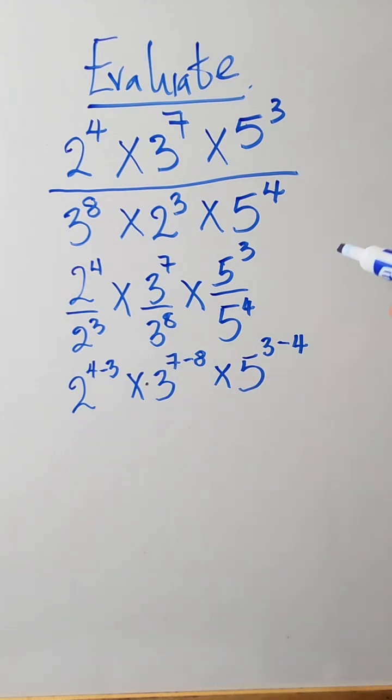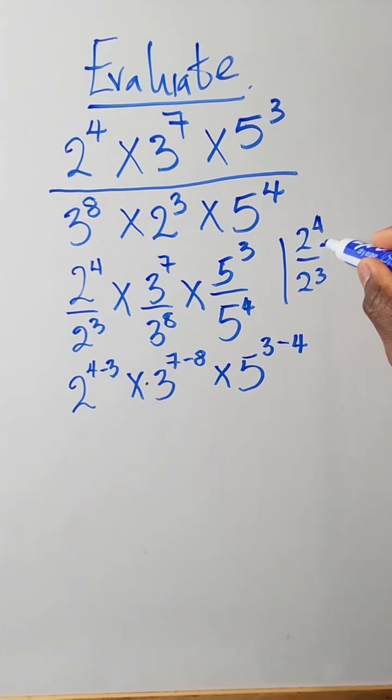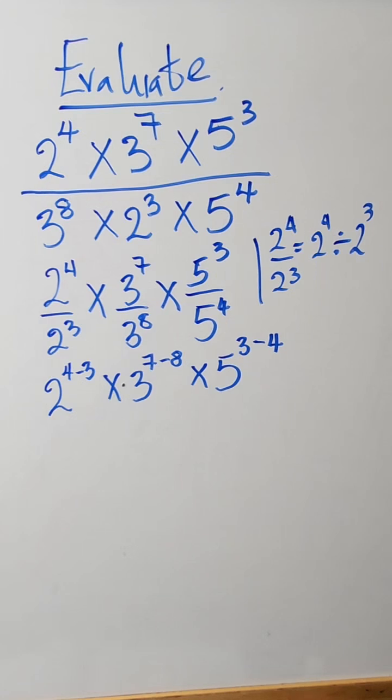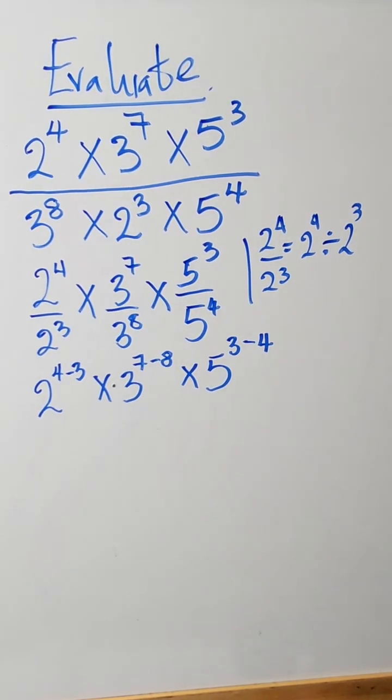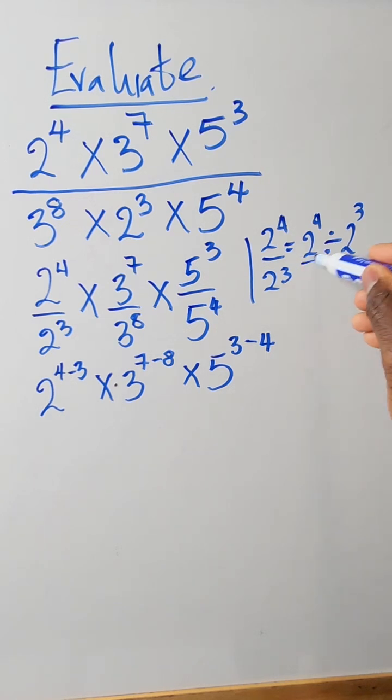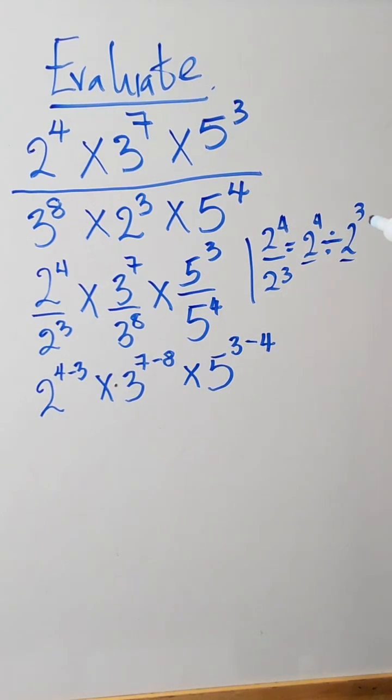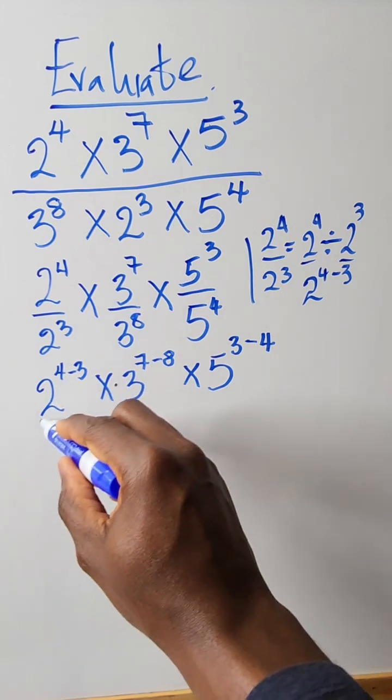So 2 raised to power 4 divided by 2 raised to power 3 - because we have the same base division sign, the power subtracts. So this becomes 2 raised to power 4 minus 3. That's how we came about this on this side.